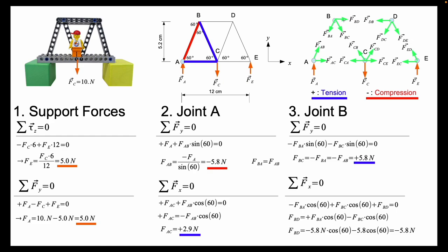So I solve this for the force on B by D and I get minus 5.8 newtons. What does the minus mean again? Yes, exactly. We are under compression not tension as I assumed in the top right diagrams.